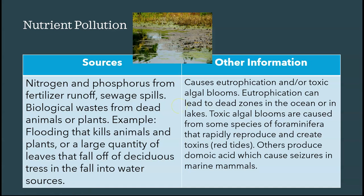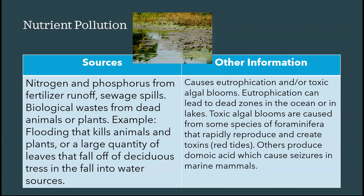Eutrophication leads to dead zones in oceans and lakes. In the ocean, certain plankton called foraminifera — producers that use nitrogen and phosphorus — can rapidly reproduce when nutrients spike. They produce a toxin and are red in color. When they bloom in massive numbers — millions, billions, trillions — they clump together and visibly turn the water red. This is what we call a red tide, even though it has nothing to do with tides.